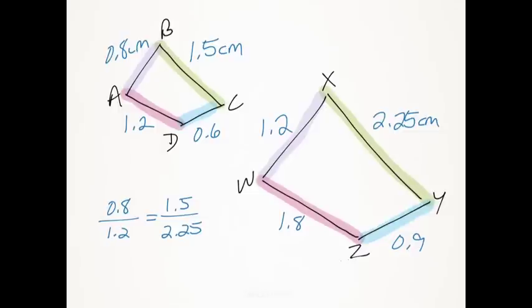So here I've picked 0.8 and 1.5. I've made those my numerator. So the numerators will represent this polygon. And then the corresponding parts, 1.2 and 2.25, I've made my denominator. And it's going to refer to this quadrilateral here.